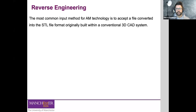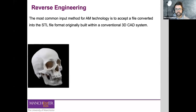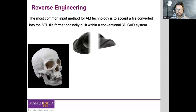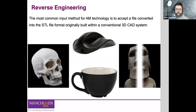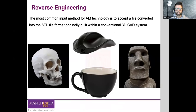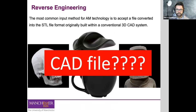But what happens if you don't have that digital support? For example, a skull retrieved from an archaeological site — you don't have a digital file to use. Or, as happens often in product development, you want to develop something based on something that already exists, like a mouse, a cup, or statues — things that exist physically but you don't have a digital file, and you need a computer design file to create an STL, slice it, and print it.